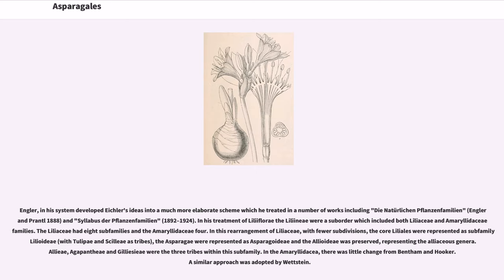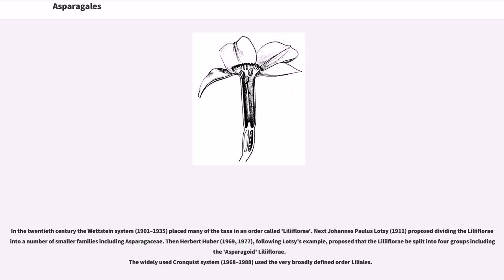In Engler's treatment of Liliiflorae, the Liliineae were a suborder which included both Liliaceae and Amaryllidaceae. The Liliaceae had eight subfamilies and the Amaryllidaceae four. The core Liliaceae were represented as subfamily Lilioideae with Tulipae and Scilleae as tribes, the Asparagi as Asparagoideae, and Alioideae was preserved representing the aliaceous genera. In the 20th century, the Wettstein system (1901–1935) placed many taxa in an order called Liliiflorae. Johannes Paulus Lotsy (1911) proposed dividing the Liliiflorae into a number of smaller families, including Asparagaceae.